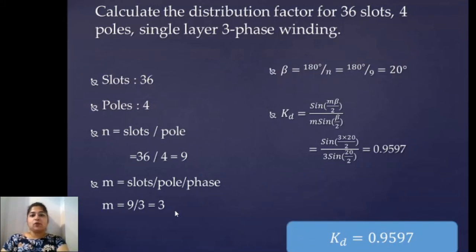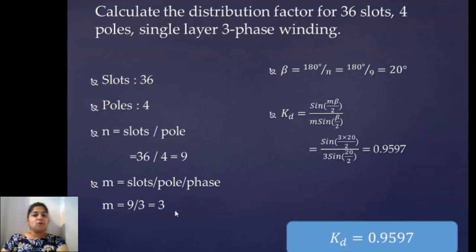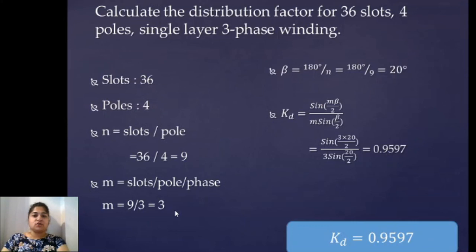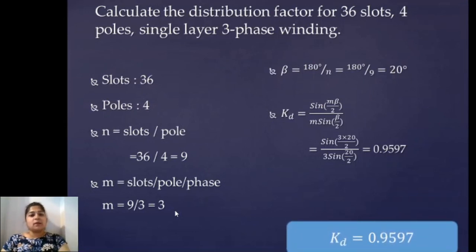Whenever you calculate kp and kd the value will always be less than 1 and very near to 1. If kp equals 1, the coil is full pitch; if the problem states the coil is full pitch you directly take kp as 1. And if the winding is concentrated instead of distributed, you take kd as 1. I hope the concept of pitch factor and distribution factor and how they are calculated is now clear to you.